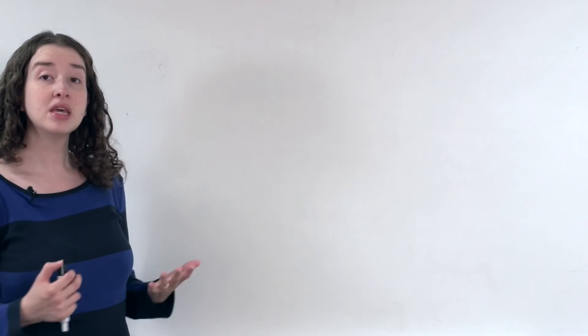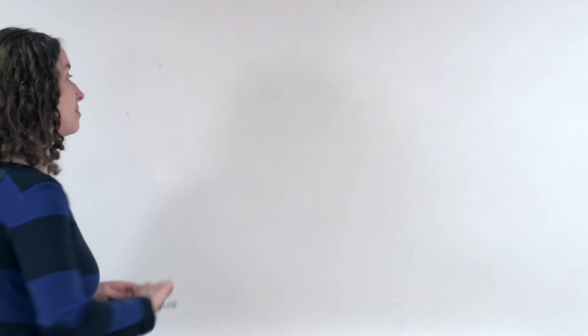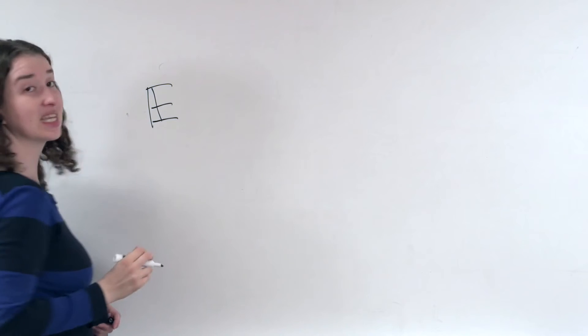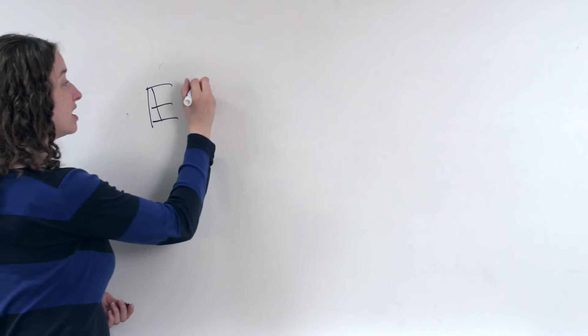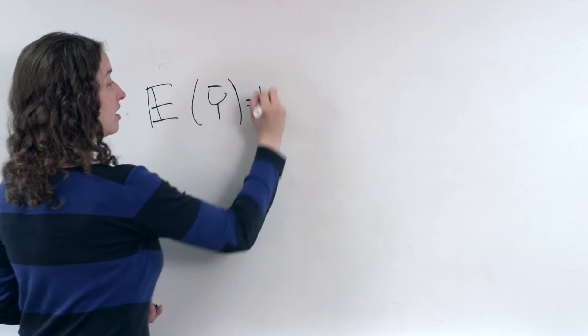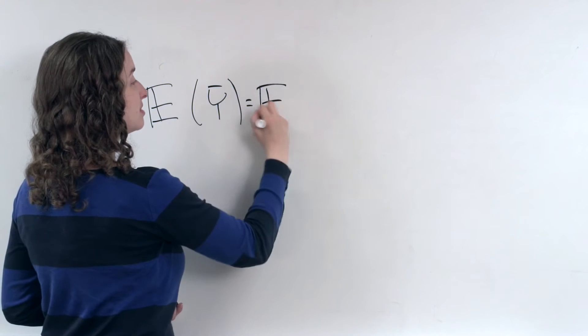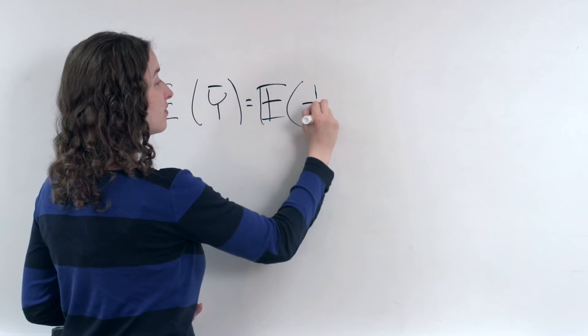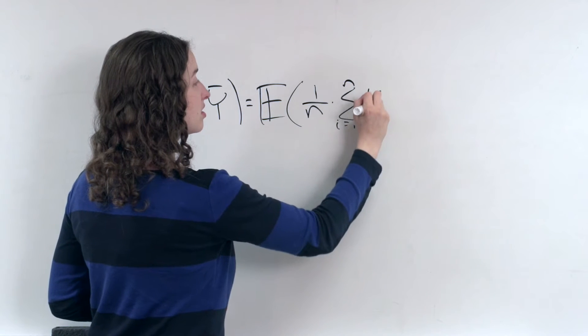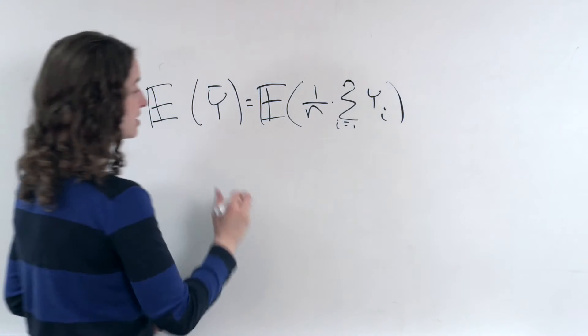I now want to demonstrate using the notation that we're using that the mean of the sample mean is equal to the mean in the population. So what we're doing is taking the expected value, the mean, of y-bar. And that's the same as saying we're taking the expected value of 1 over n times the sum of all of our data points.